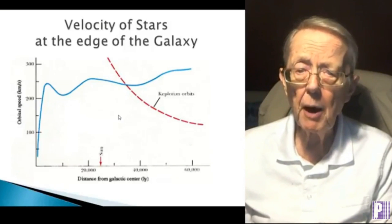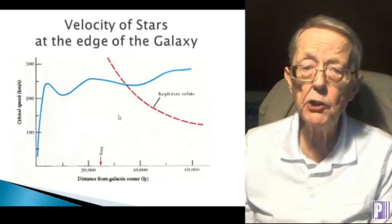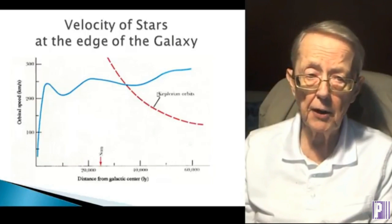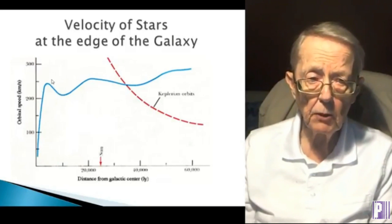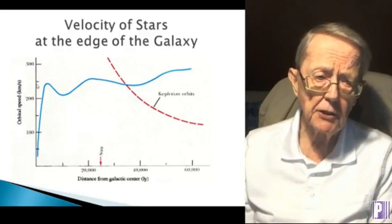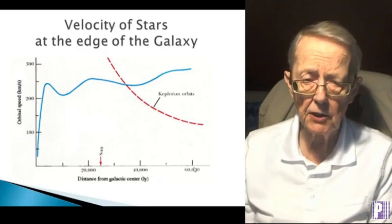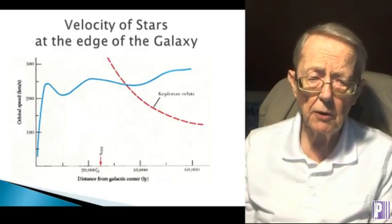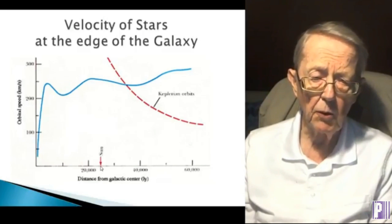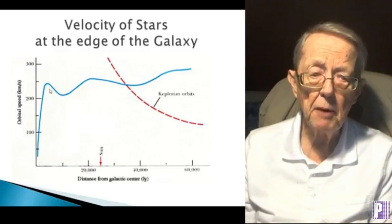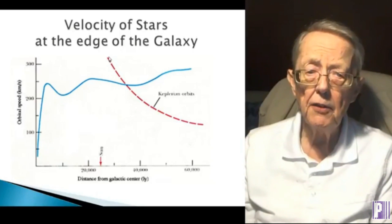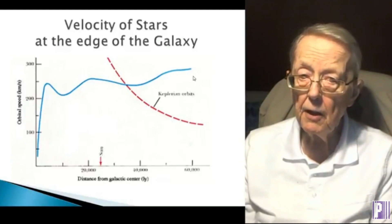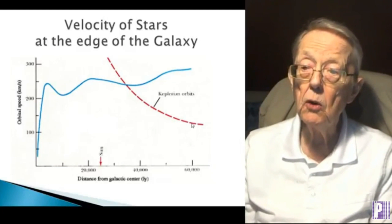Now this becomes a problem because when mainstream scientists measure the velocity of the stars at the edge of the galaxy, they get a number that is too high compared to their calculated number. This is a typical graph I'll be using throughout. It has a vertical axis with velocity in kilometers per second, a horizontal axis in light years. Our solar system is shown at about 24,000 light years from the core. The blue curve is the measured values; the red curve is the calculated values using the Keplerian equations. Measured values too high, calculated values too low — there's a problem.